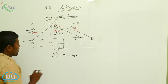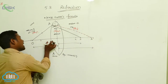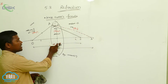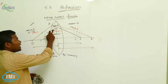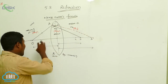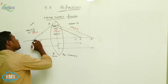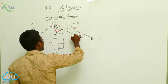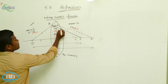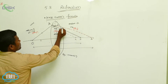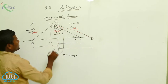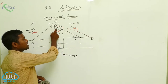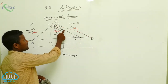Now I am considering this surface. This is the rarer medium, this is the denser medium, this is the rarer medium again. Here n_a is present, and here n_b is present. Now, considering a point-size image, I take one ray passing through like this. If you draw the normal line, this is the normal line — this is the incident ray, this is the refracted ray, and then this is the transmitted ray.